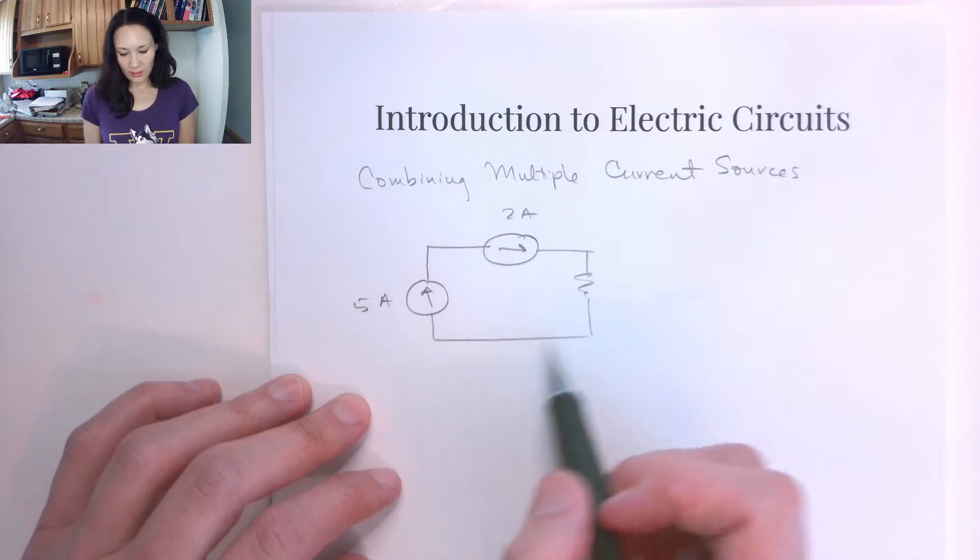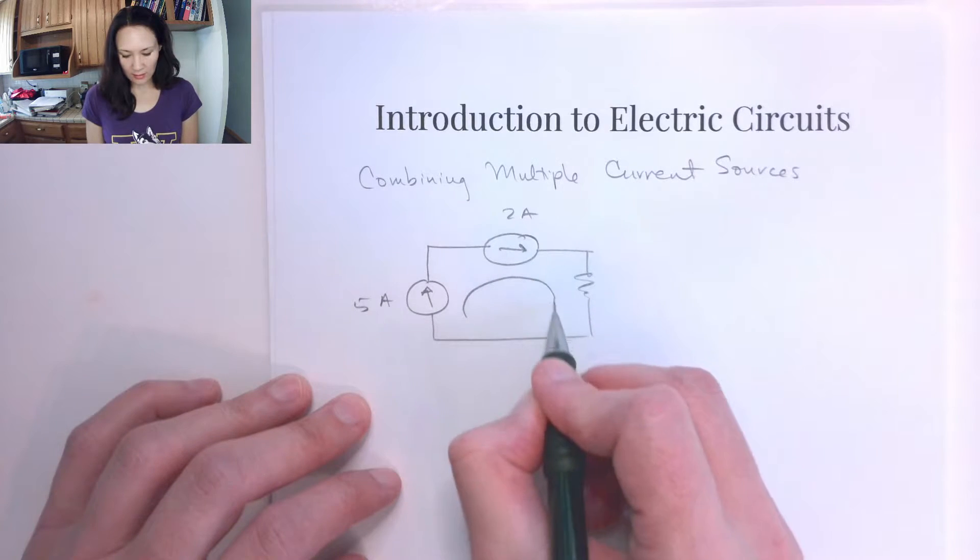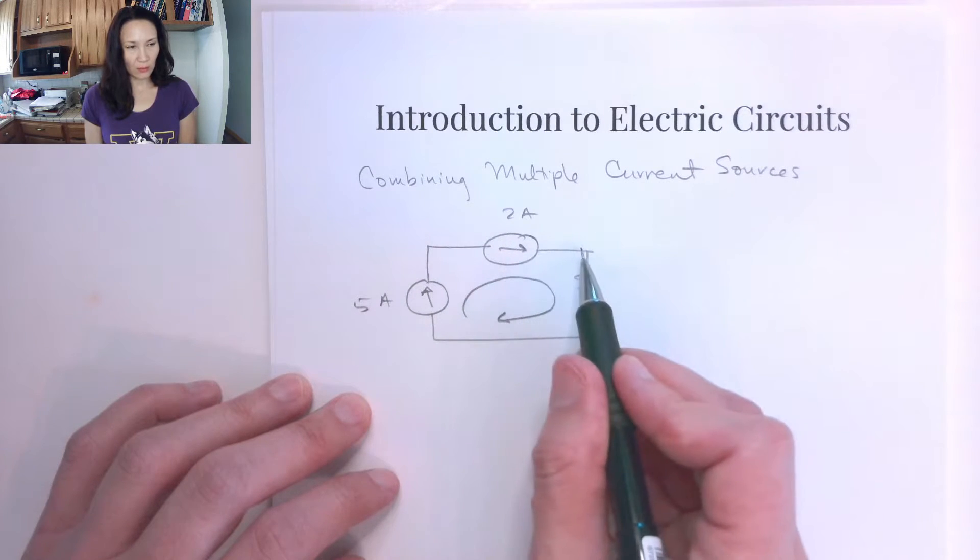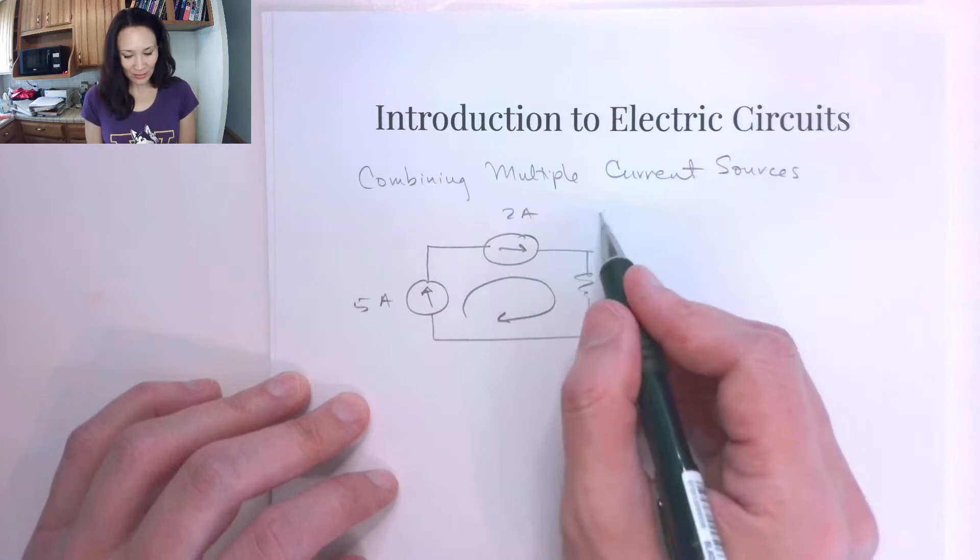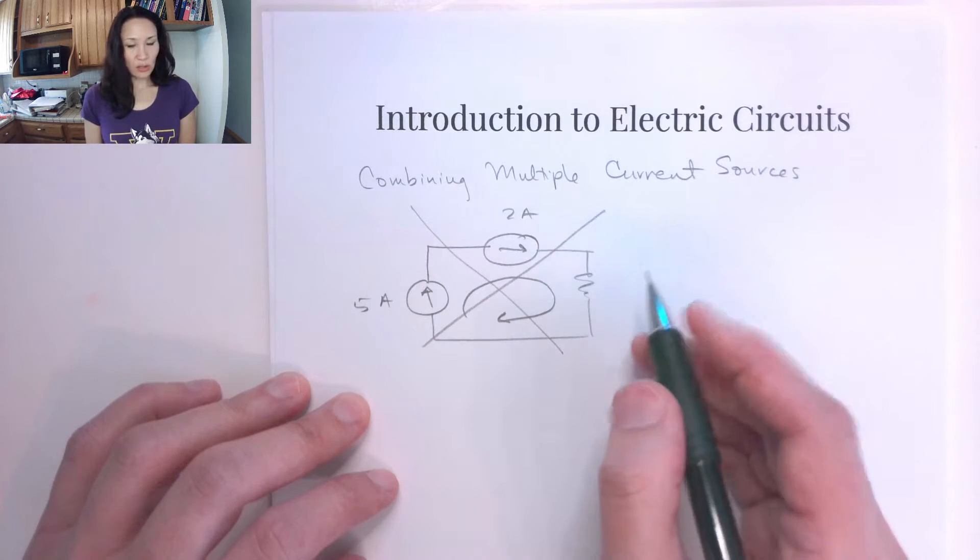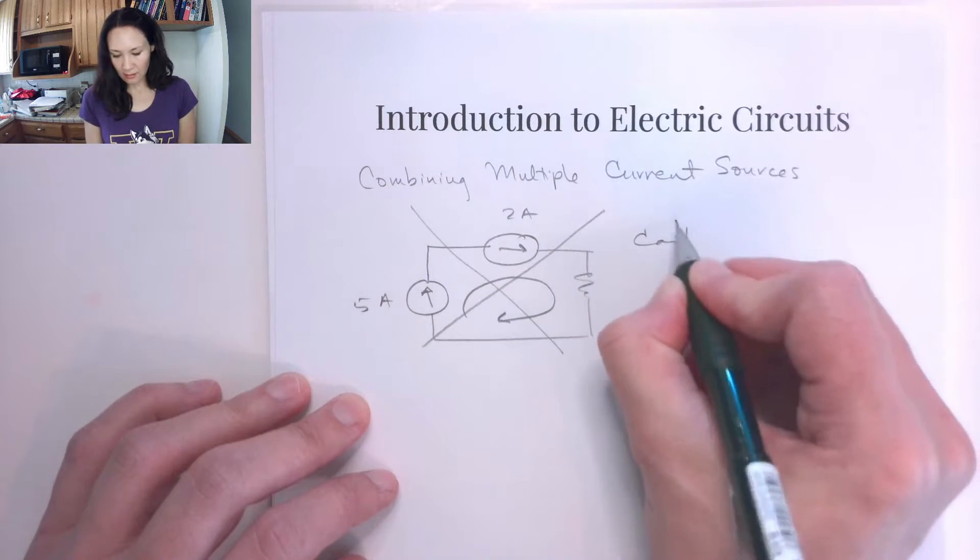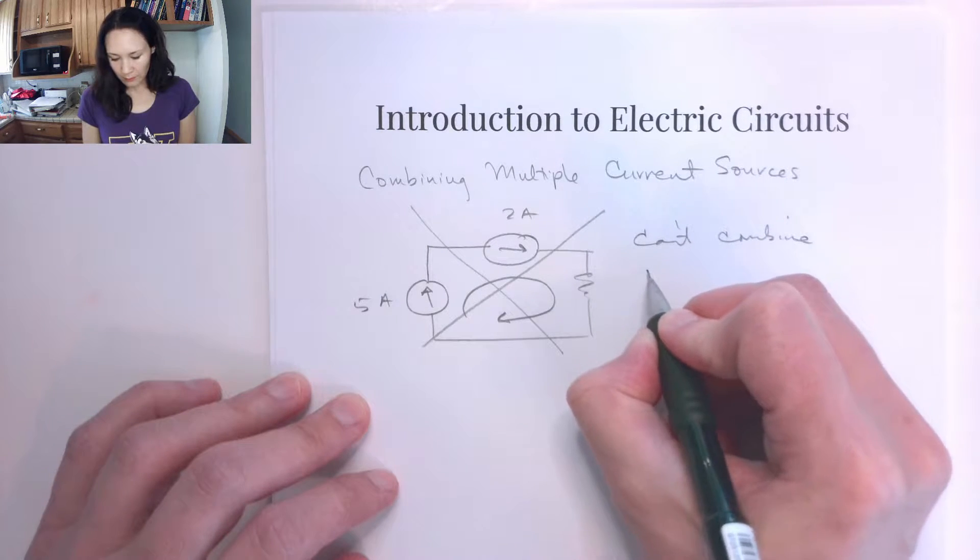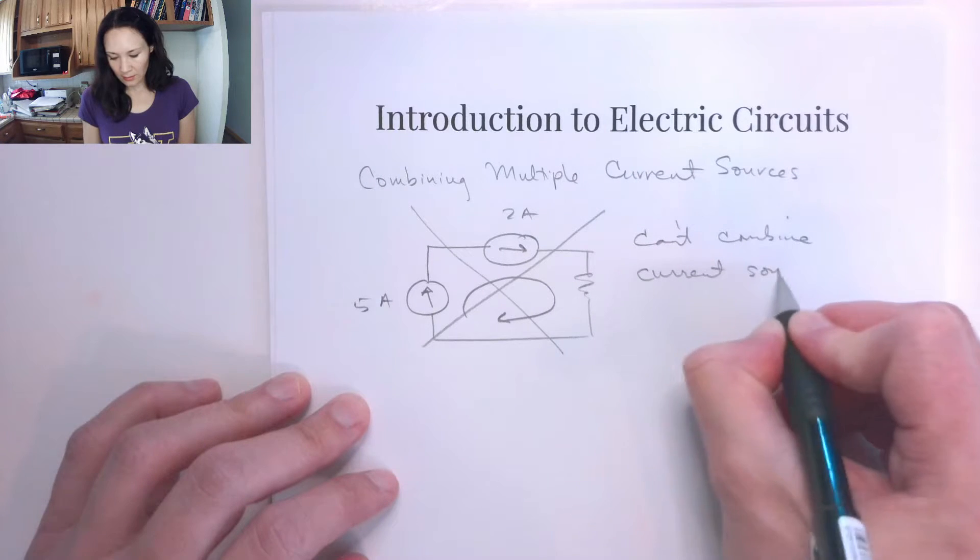We know since this is a series circuit that the current is the same everywhere, right? So how is it that we could have 5 amps of current on this branch but then 2 amps of current on that branch? And the answer is we can't. Actually we can't combine current sources in series.